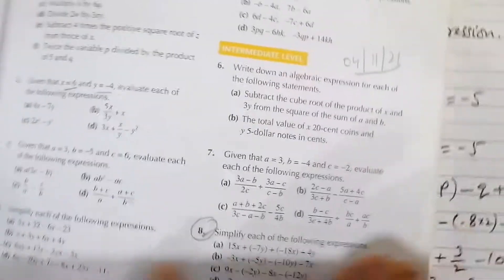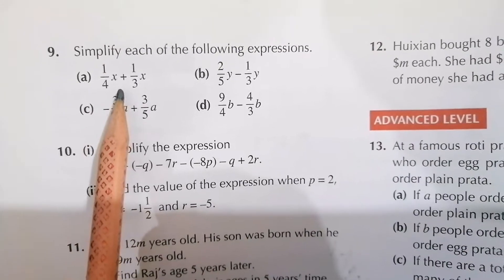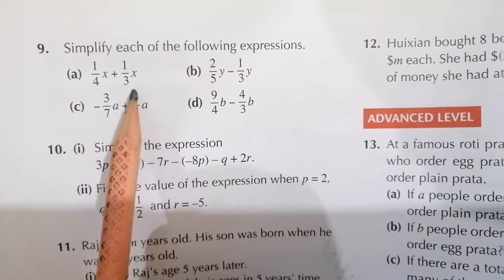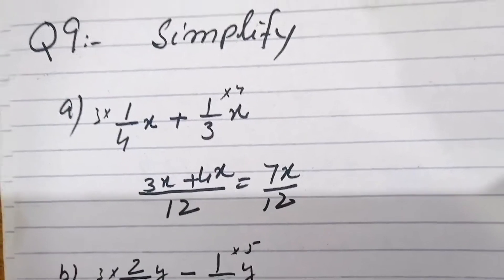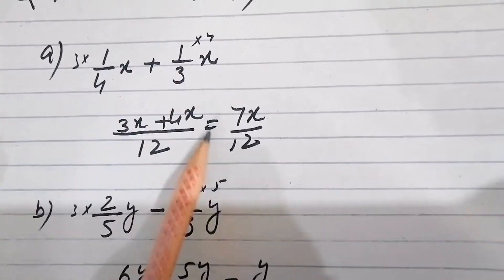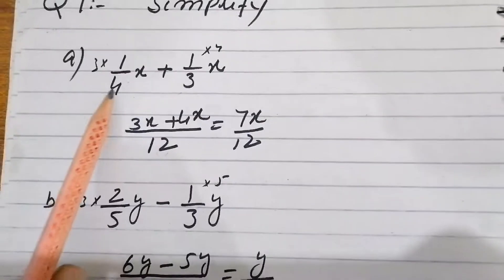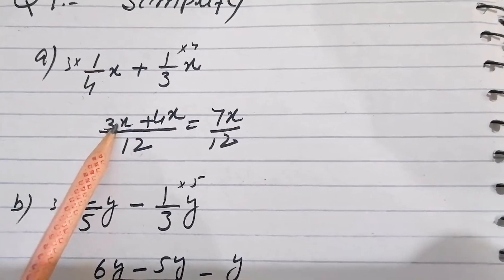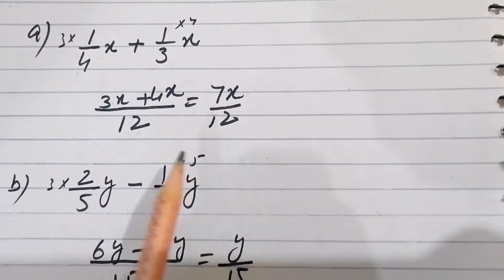Question number 9: simplify each of the following expressions. Part a: 1/4x + 1/3x. Taking LCM of 4 and 3, which is 12. Multiplying: 3/12x + 4/12x = 7x/12. Part b: 2/5y - 1/3. Taking LCM of 5 and 3, which is 15. We get 6/15 - 5y/15, so 6 minus 5y over 15, giving y/15.